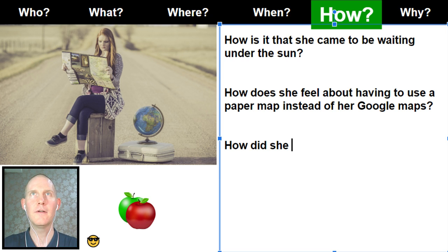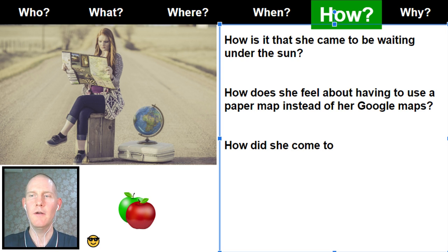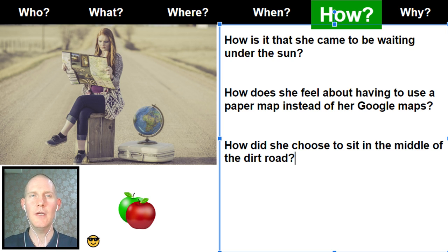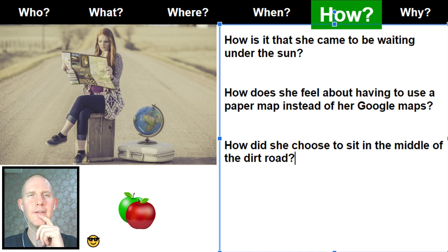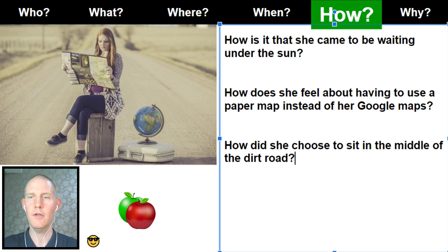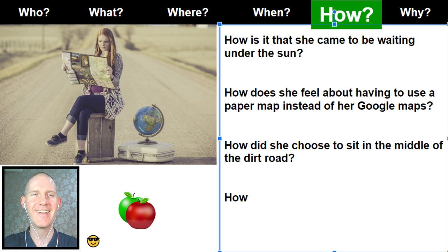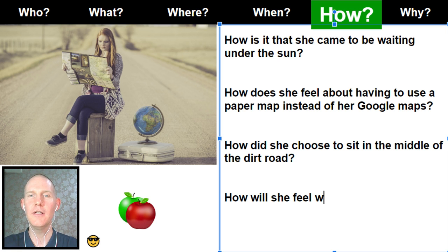Leila Almeida says 'how did she choose to stay in the street?' — I'd say 'how did she choose to sit in the middle of the dirt road?' I wouldn't call it a street, because a street implies a hard surface like cement, stone, or asphalt. This is a dirt road. One more how: 'how will she feel when she sees the truck coming down the road?'